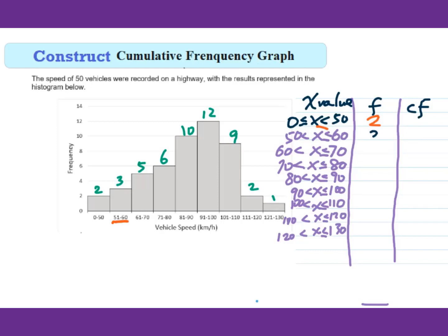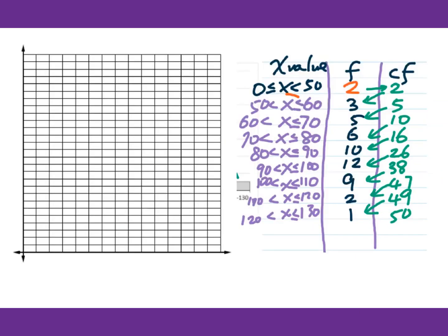After I finish this x value, then I go to the frequency. So we have 3, 5, 6, 10, 12, 9, 2, 1. Then I'm working on the cumulative frequency table. 2 here, adding 3, that's 5. Adding 5 is 10. 10 add 6 is 16. 16 add 10, that's 26. 26 add 12, 38. 38 add 9, 47. 47 add 2, that's 49. Add 1 will be 50. Now according to this cumulative frequency table, I need to cross this out.